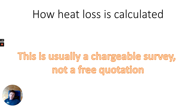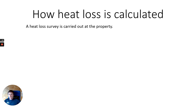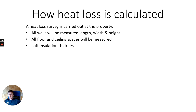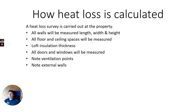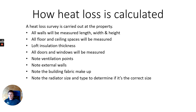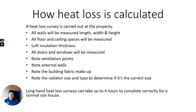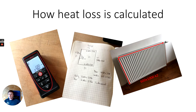A heat loss survey is usually a chargeable survey, not a free quotation. All walls, lengths, widths and heights are measured; all floors and ceiling spaces are measured; loft insulation thickness is recorded; all doors and windows are measured; we note ventilation points, external walls, building fabric makeup, and we note radiator size and type to determine if it's the correct size. Long-hand heat loss surveys can take upwards of four hours to complete on-site for a normal-sized house. We'll measure everything, make rough guides, and measure all your radiators so we can go back and calculate if they're actually the right size.